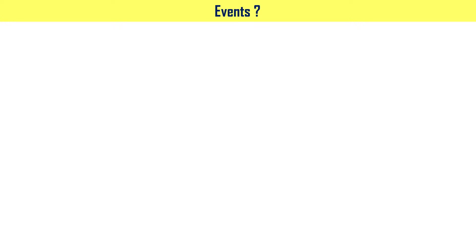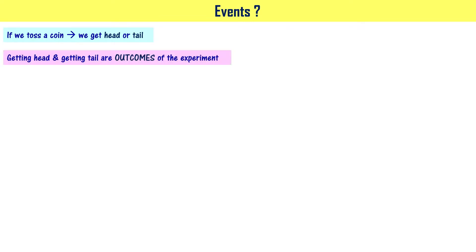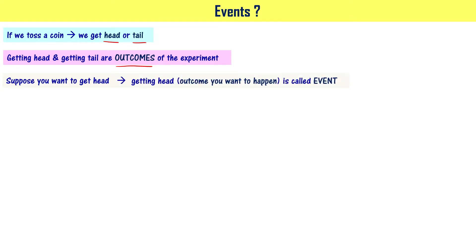Introduction to probability. In this video, let us understand a few events given in your syllabus. If we toss a coin, we know that we get head or tail. Getting head and getting tail are outcomes of the experiment. When you toss a coin and you are expecting head, that outcome you want to happen is called an event.